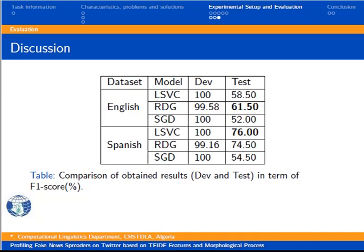The Ridge classifier is more or less efficient, with a recorded score of 76% for Spanish and 61% for English. The reason behind these results is likely the lack of data.